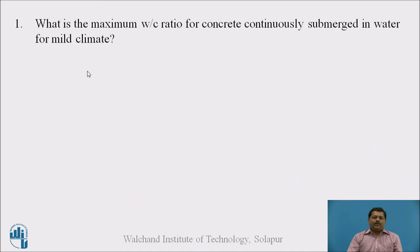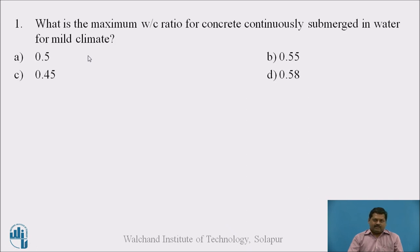Now a question for you: what is the maximum water-cement ratio for concrete that is continuously submerged in water for a mild climate? Pause the video, think about it, observe the earlier slide, and give the answer. The answer is 0.58 is the maximum water-cement ratio.